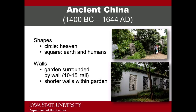Circles are often included and they represent heaven. Squares or rectangles are included and they signify earth and human social organizations. Chinese gardens include a number of walls. The entire garden is surrounded by a wall, usually 10 to 15 feet tall. Often this exterior wall has a wavy edge on top to suggest floating clouds. The garden itself includes a number of shorter walls within the garden that divide the space into different rooms. The top image on this slide shows a circle moon gate separating two spaces in the garden. It also shows an intricate paving pattern as well as extensive use of rocks and just a few plants. The bottom image on this slide shows an exterior wall that surrounds the garden.